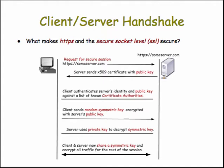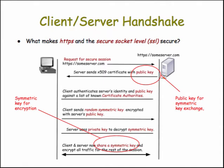Now, why do they use both public key and symmetric keys in this handshake? The reason is that they use the public key for exchanging the symmetric key, but they use the symmetric key for the actual encryption of the data being sent back and forth. This is simply because symmetric key cryptography is much more efficient than public key cryptography, saving time in the traffic between client and server.